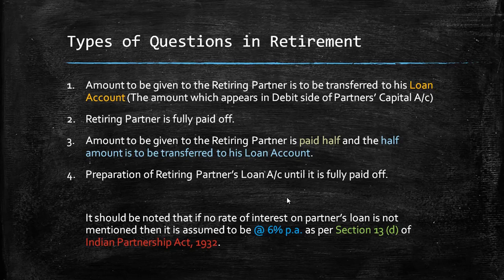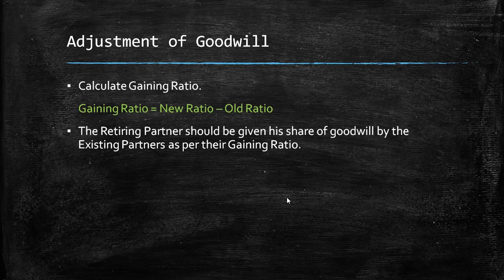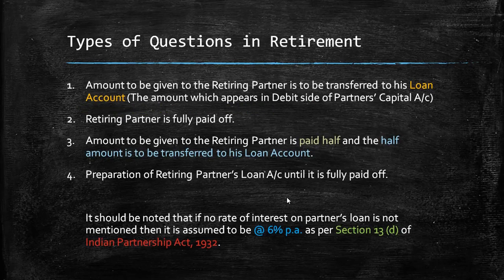One more important thing: this chapter on Retirement is very similar to Death of a Partner. There is no major difference between retirement and death of a partner, except that in retirement the partner voluntarily goes out, while death is uncertain and can happen anytime. We will cover death of partner afterwards. For now, focus on retirement, go through the PDF theory one more time, and if you have any doubts, please let me know.